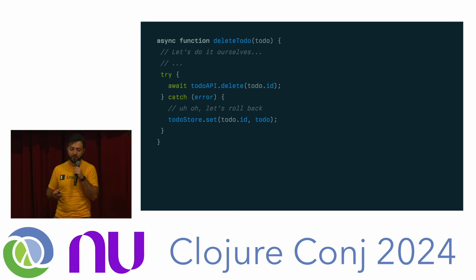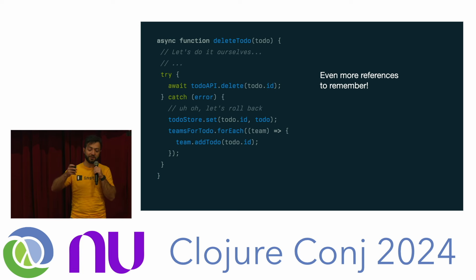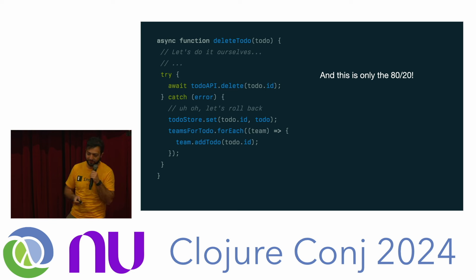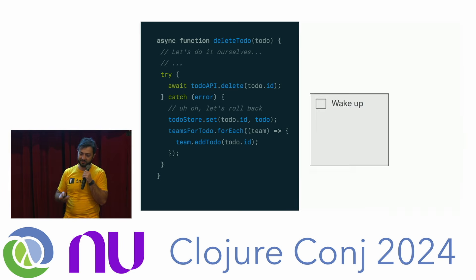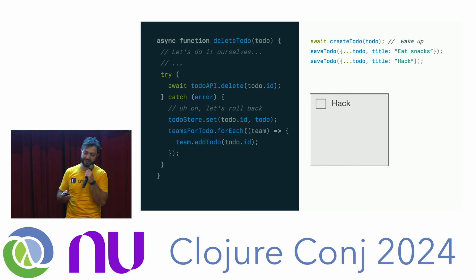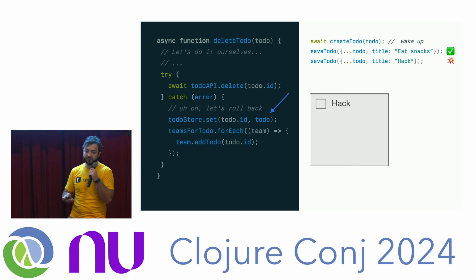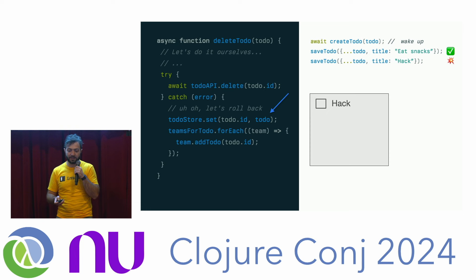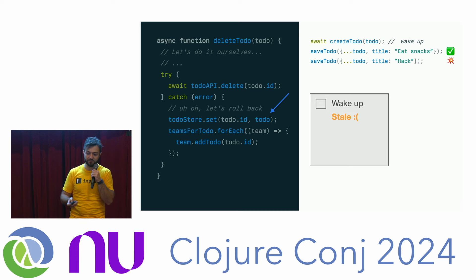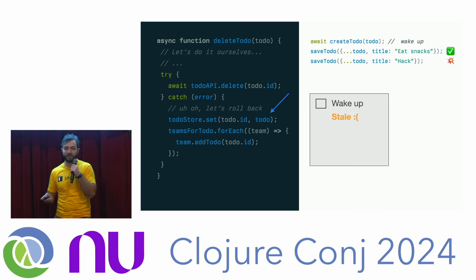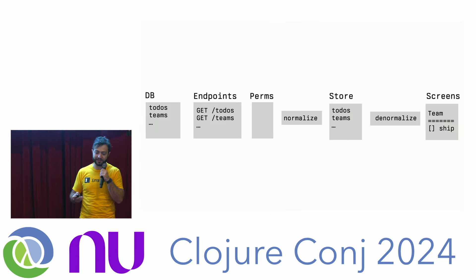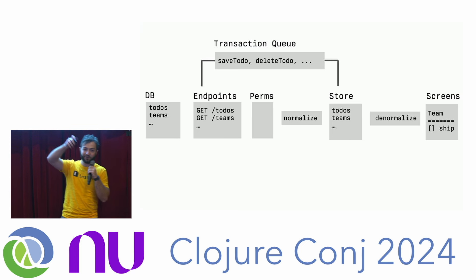And this is only an 80/20 solution — there's a subtle bug. Imagine you create a to-do 'wake up,' then make two immediate changes: 'eat snacks' and 'hack.' If 'hack' fails, ideally you should see 'eat snacks' — but because of how we wrote the rollback, we reference the very first to-do, so we'd actually show 'wake up.' These are the subtle bugs you either ignore or solve by creating a queue on the front end — saving all changes so you can undo them as things go along.